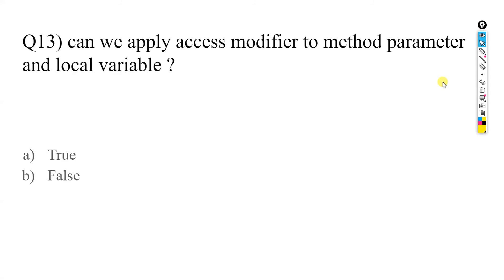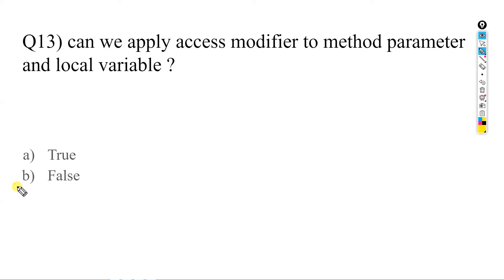We've reached 13 questions — just seven more to go. Can we apply access modifiers to method parameters and local variables? The answer is false — we cannot apply access modifiers to method parameters and local variables in Java.